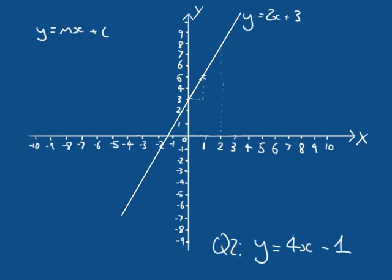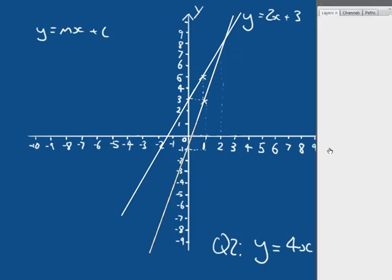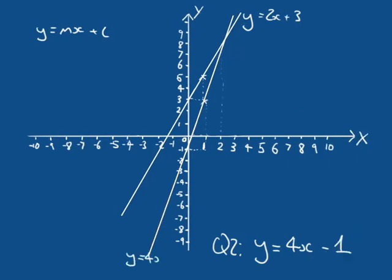Welcome back. Our gradient is 4 and our intercept is negative 1, so we cut the Y axis at negative 1. Moving one unit in X, we move up four units in Y, giving a point at (1, 3). Connecting those points gives the line Y equals 4X minus 1. Checking with X equals negative 1: 4 times minus 1 is minus 4, minus another 1 is minus 5 — and indeed Y is minus 5.